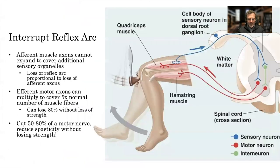What we're looking for with denervation is to interrupt the reflex arc. The afferent muscle axons cannot expand to cover additional sensory organelles like efferent motor axons can — so there's a loss of reflex arc proportional to the loss of afferent axons. The afferent motor axons can multiply to cover five times the normal muscle fibers. You can lose 80% of your motor axons without any loss of strength. Therefore, if you cut somewhere between half to 80% of a motor nerve, you can reduce spasticity without losing strength.